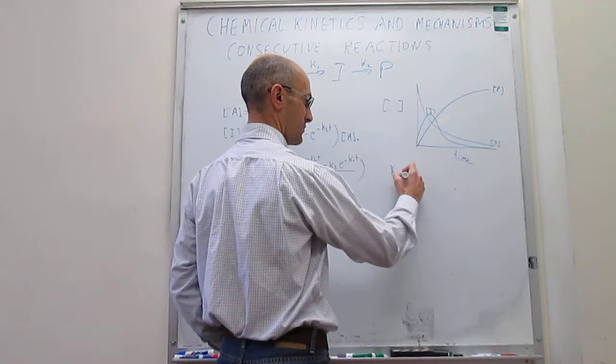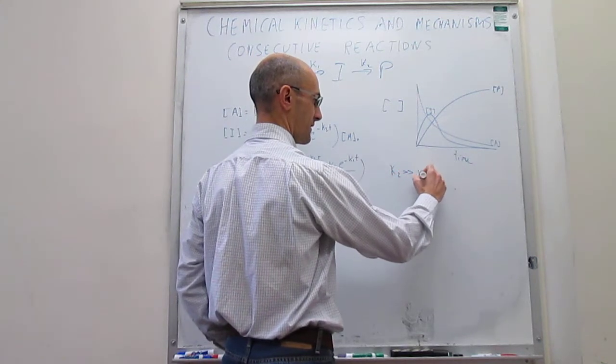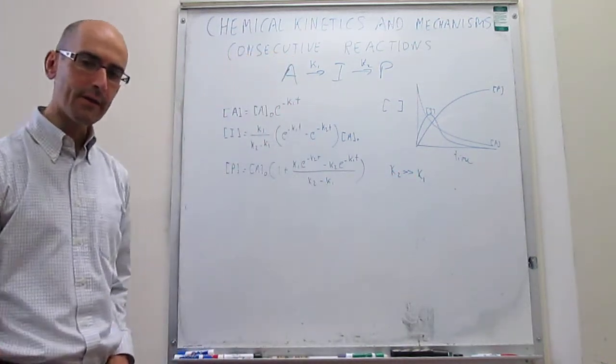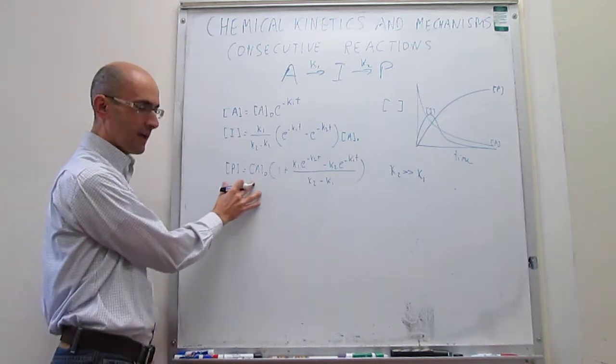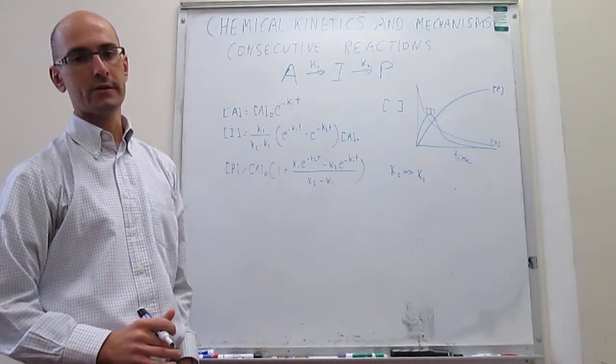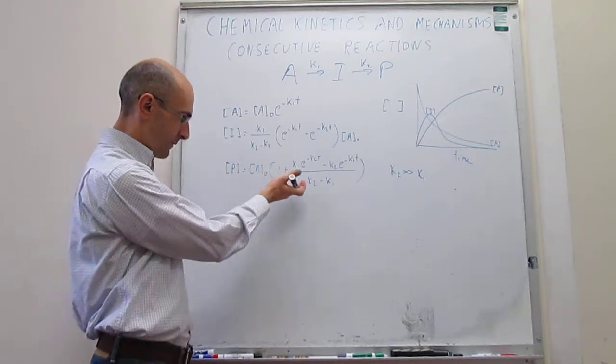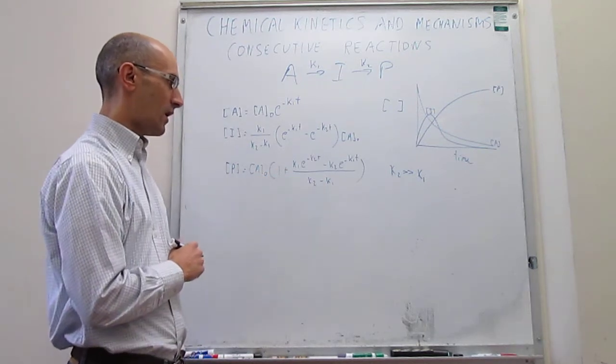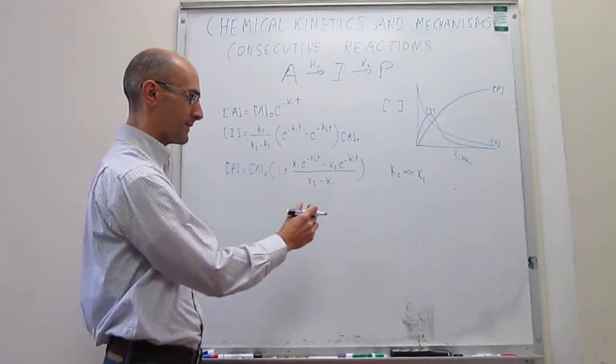So we take that K2 is much, much larger than K1. So we can take and see how that affects the production of products. We can examine what happens to this expression once you apply this approximation.